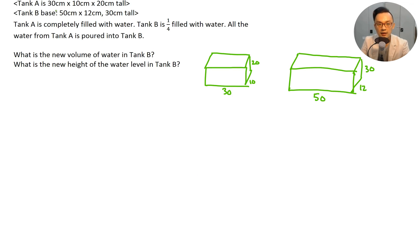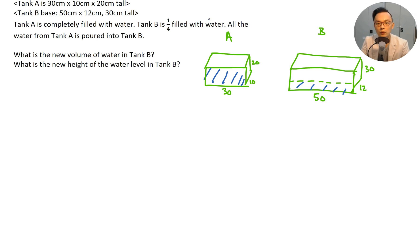Tank A is 30 by 10 by 20 cm tall, and Tank B is 50 by 12 by 30 cm. Tank A is completely filled with water. Tank B is one quarter filled with water. All the water from Tank A is poured into Tank B. What is the new volume of water in Tank B? What is the new height of the water level in Tank B?